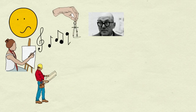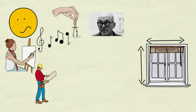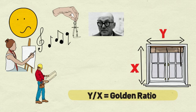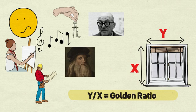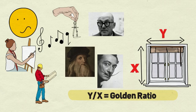The famous architect Le Corbusier designed windows whose length and breadth ratios were golden ratios. Similarly, artists like Leonardo da Vinci and Salvador Dali used the golden ratio in their work.